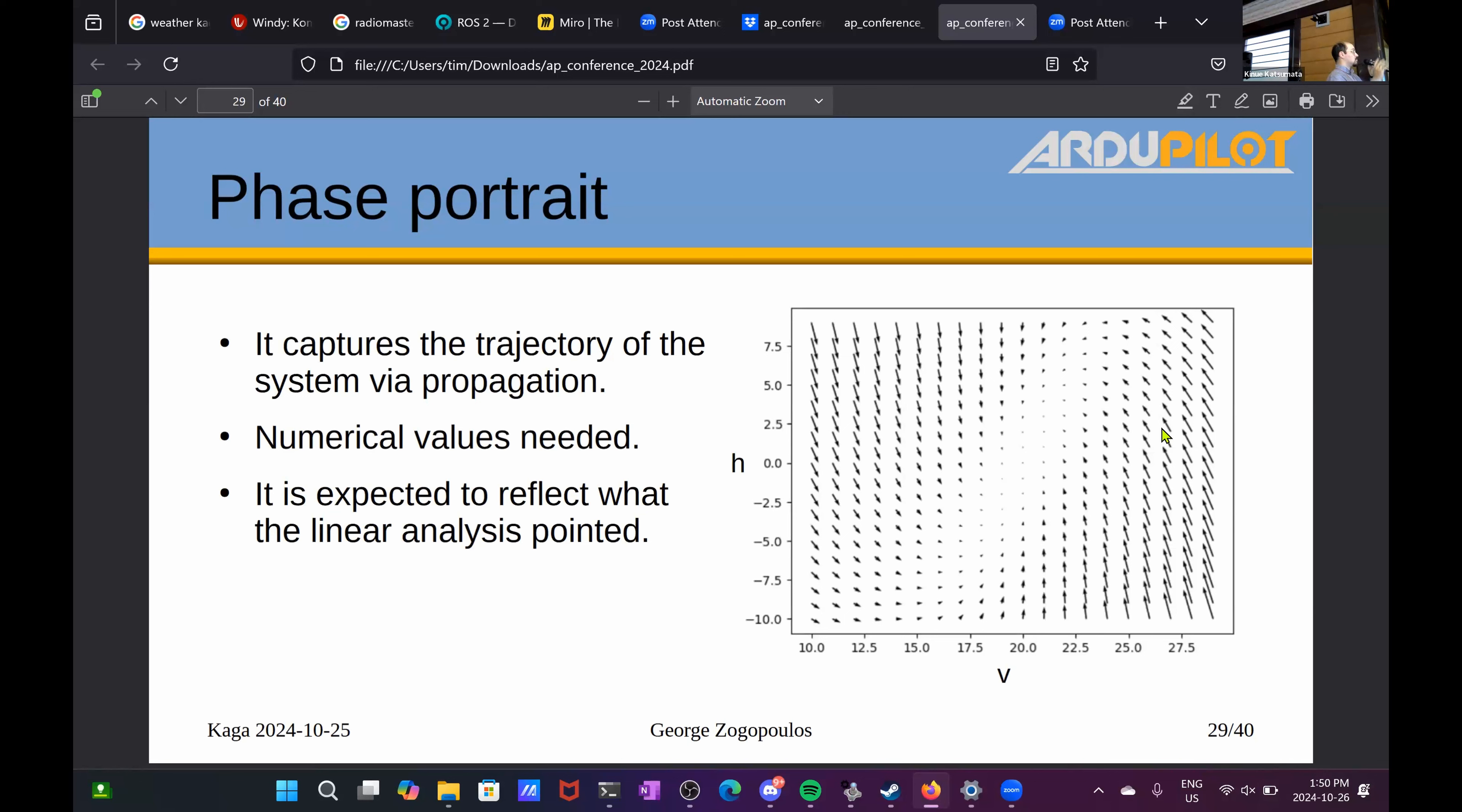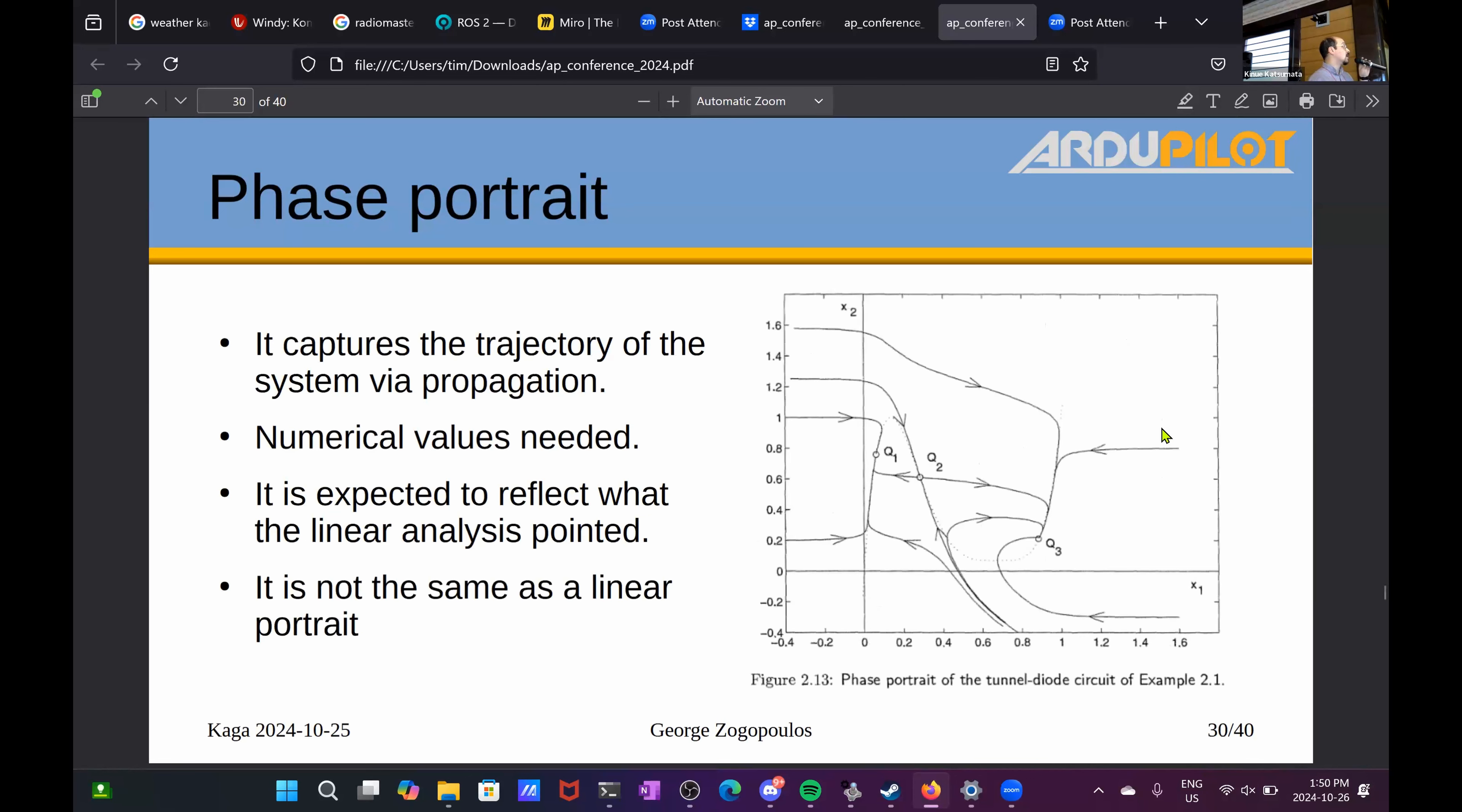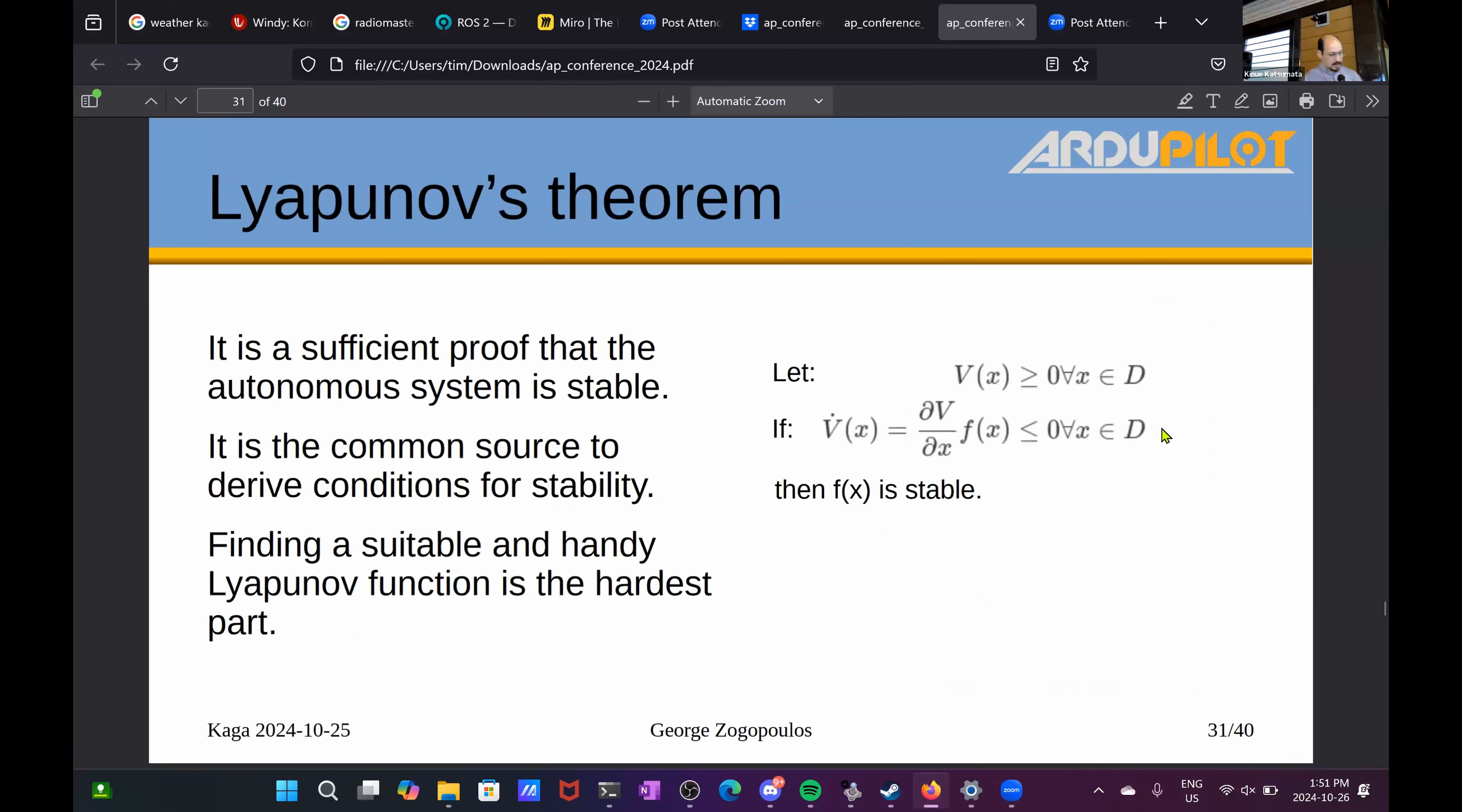This is pretty in appearance to what we saw before as a focus point. But a phase portrait of a nonlinear system doesn't have to be. It could be like this, and this is from a book example of a tunnel diode circuit. It can be completely nonlinear, very weird. Thankfully, we're not at that case.